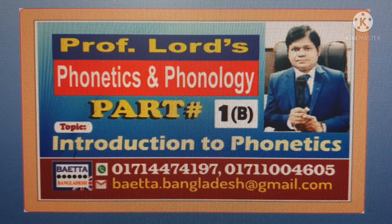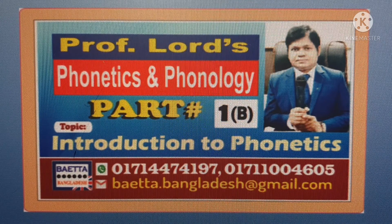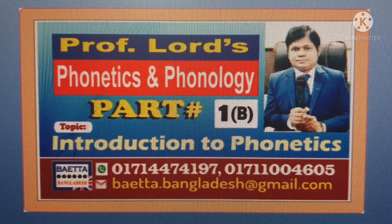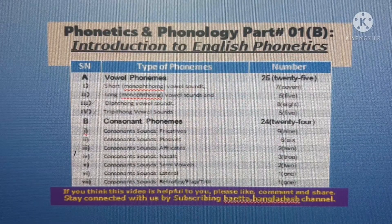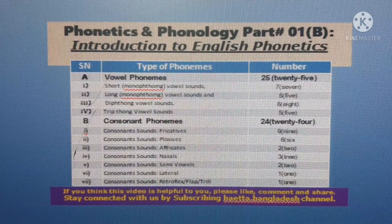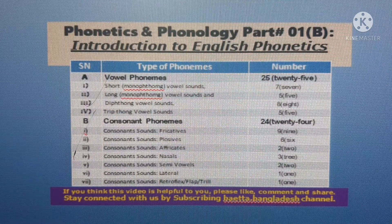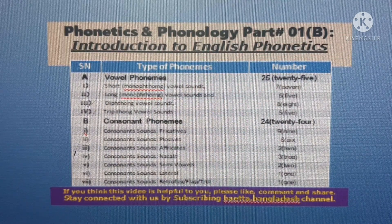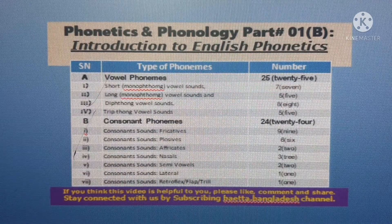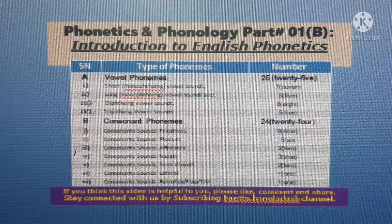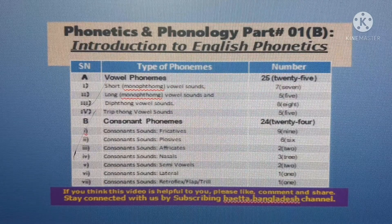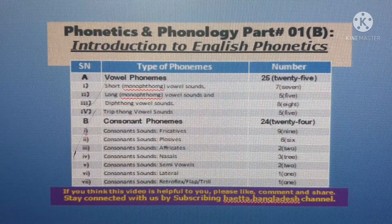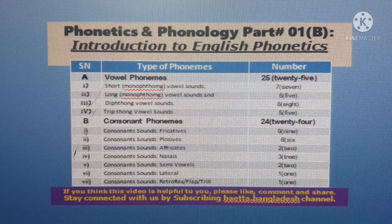The 49 English phonemes are divided into two major categories: vowel phonemes and consonant phonemes. A vowel phoneme is one in which the airflow is unobstructed when the sound is made. We have 25 vowel phonemes in English phonetics. In contrast, a consonant phoneme is one in which the airflow is cut off either partially or completely when the sound is produced. We have 24 consonant phonemes in the English phonetic alphabet.